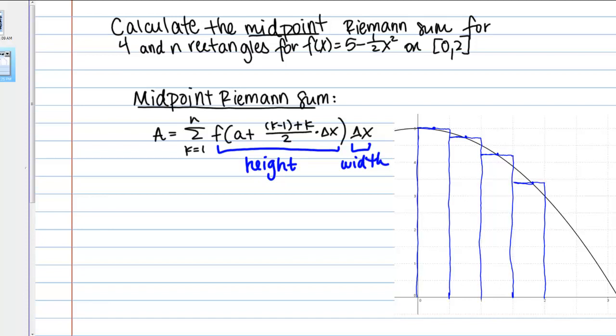Riemann sums, once again, are just a way to approximate the area under a curve by dividing it into rectangles and then summing up the area of those rectangles. Now, midpoint Riemann sum, as you can see in this picture here, means that I'm using the midpoint of each rectangle to determine the height. The midpoint there is determining the height based on the function value.